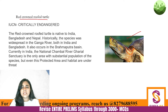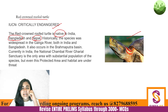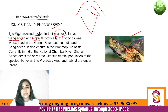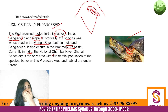Next is the Red Crowned Roofed Turtle — the red crown refers to the red marking visible on its head. This turtle is also critically endangered. It is native to India, not endemic — native to India, Bangladesh, and Nepal. The area where they are found is the Indo-Gangetic belt and also the Brahmaputra basin. Historically the species was widespread in the Ganga River both in India and Bangladesh.